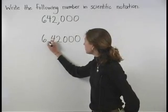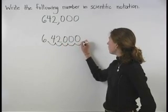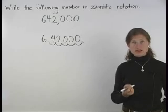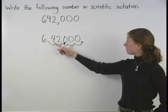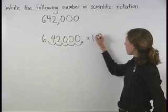Since we would need to move the decimal point 1, 2, 3, 4, 5 places to the right, we have an exponent of positive 5. So we have 6.42000 times 10 to the 5th power.